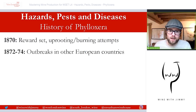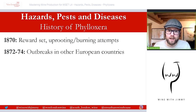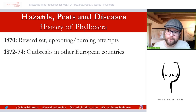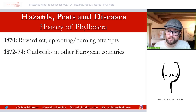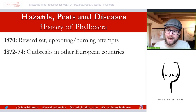In 1872, there were outbreaks in the Douro Valley in northern Portugal, in Austria, and in Crimea. By 1873-74, outbreaks reached California, Germany, and Spain.